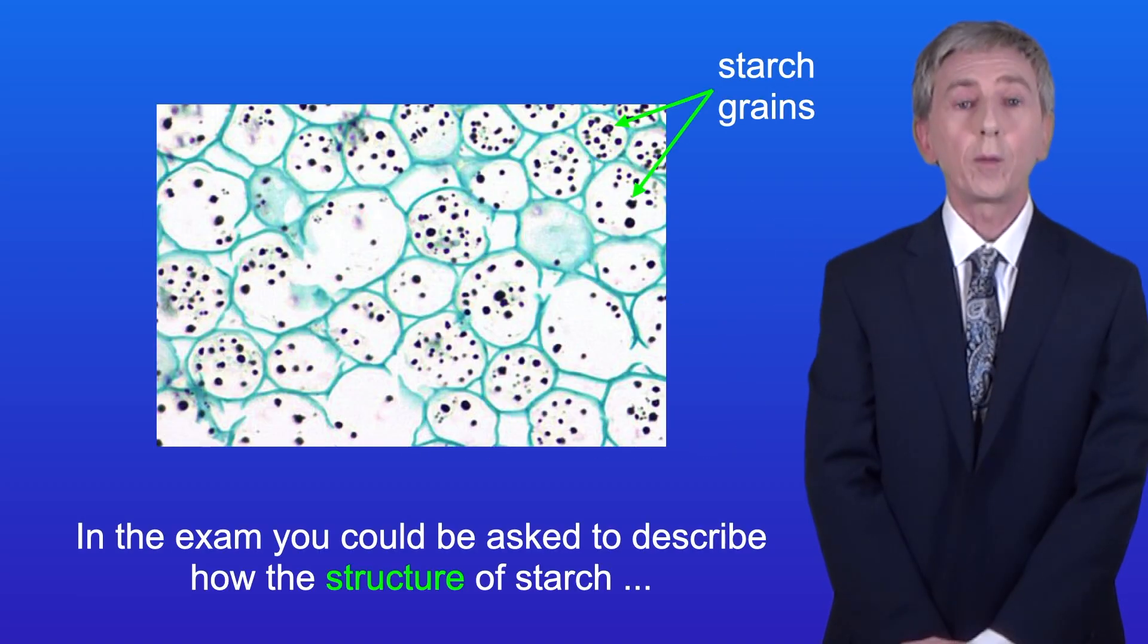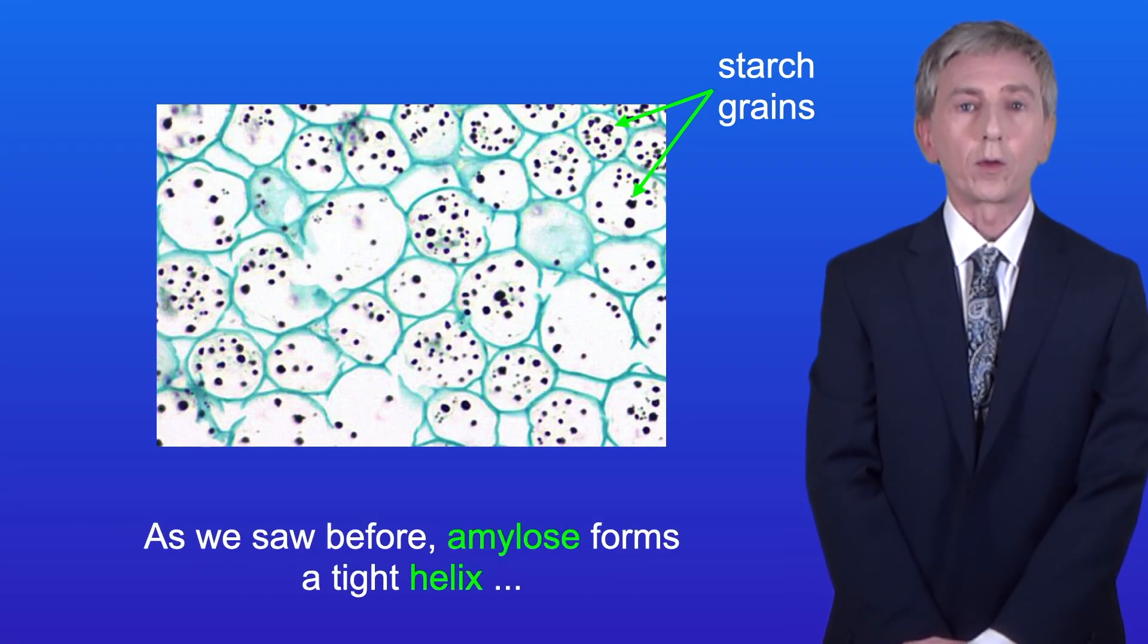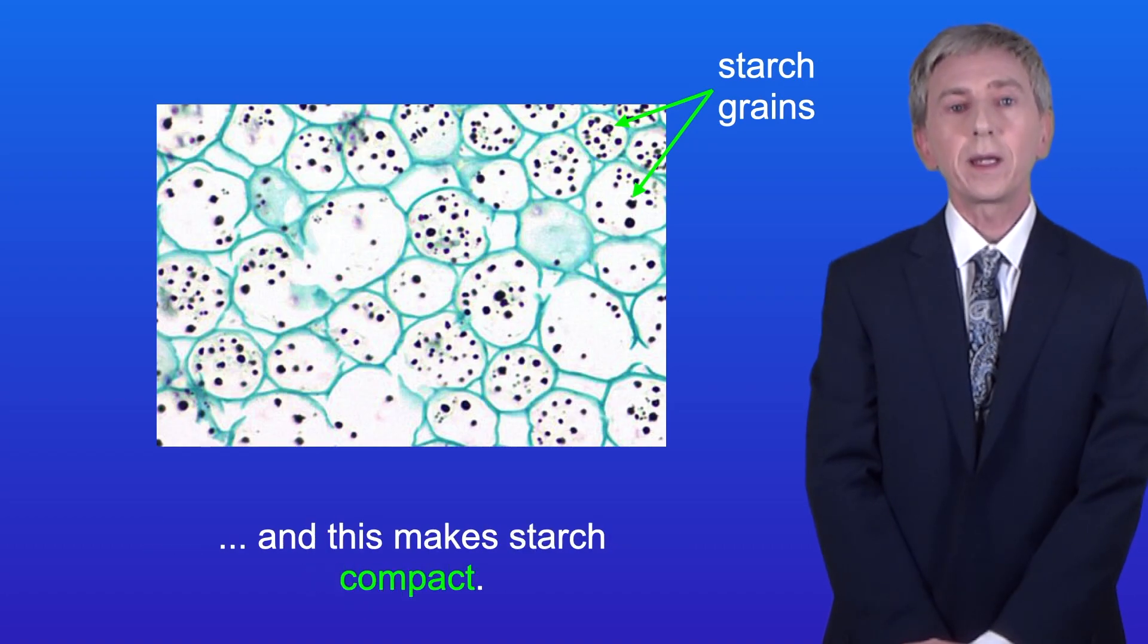Now in the exam you could be asked to describe how the structure of starch is related to its function. As we saw before, amylose forms a tight helix, and this makes starch compact.